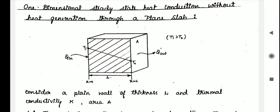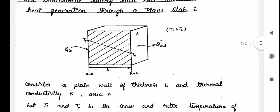In this video, I am discussing one-dimensional steady-state heat conduction without heat generation through a plane slab. Consider a plane wall of thickness l, thermal conductivity k, and area A. Let Ti and To be the inner and outer temperatures of the plane wall.